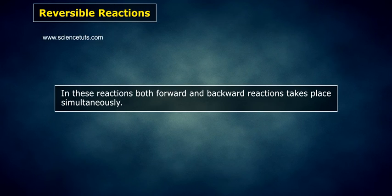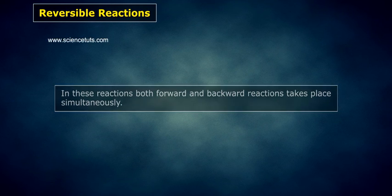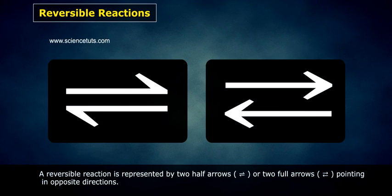In these reactions, both forward and backward reactions take place simultaneously. A reversible reaction is represented by two half arrows or two full arrows pointing in opposite directions.